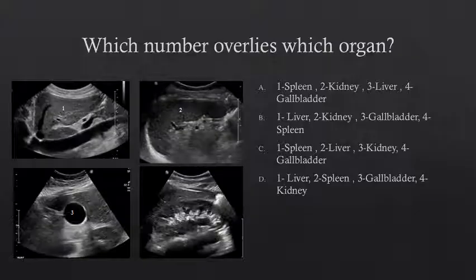In the first image, the number one overlies the liver. In the second image, the number two overlies the spleen. In the third image, the number overlies a hypoechoic structure with posterior acoustic enhancement, which is the gallbladder. In the fourth image, the number overlies the central echogenic fat of the kidney — notice the surrounding hypoechoic cortex.